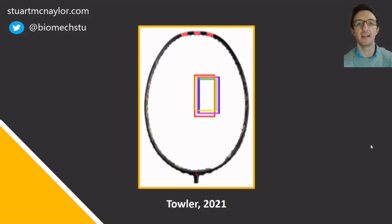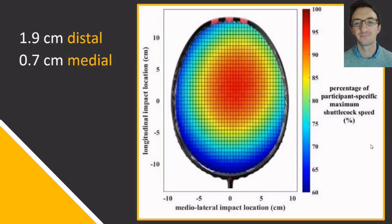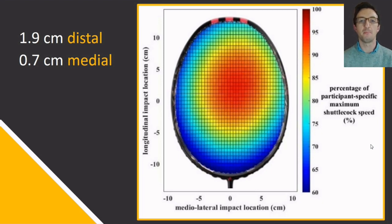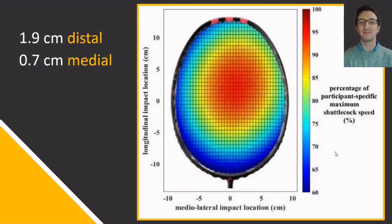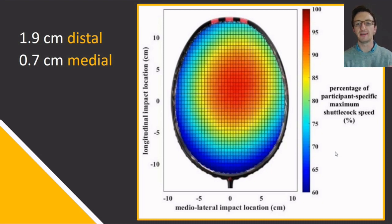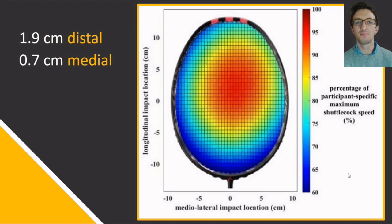That result of a slightly medial impact location is consistently observed across different racket stiffnesses. Now that we know what elite players are doing in terms of impact location, we can relate this to performance outcomes. The dependent variable is expressed as a percentage of each participant's maximum shuttle speed to avoid inter-individual variation clouding results. We observed negative significant quadratic relationships between impact location in both directions and shuttle speed, meaning there is an optimal point in both directions for developing fast smashes.